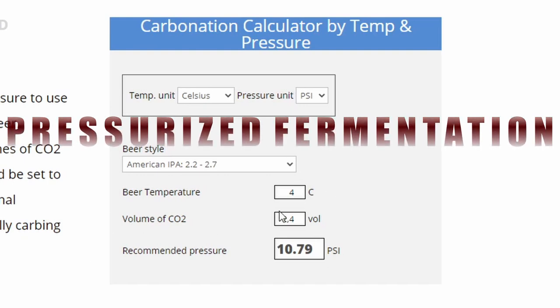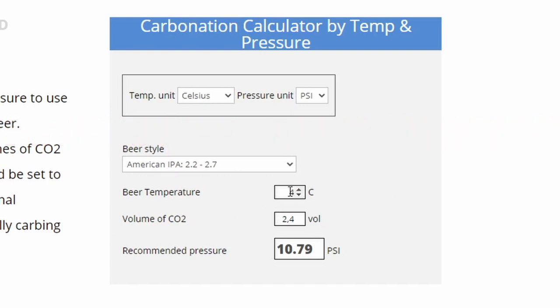I'm fermenting under pressure. Let's stick with the IPA for now. Let's say I'm fermenting at 20°C. Still want 2.4 volumes of CO2. I will set my spunding valve to 26 PSI or 1.8 bar.